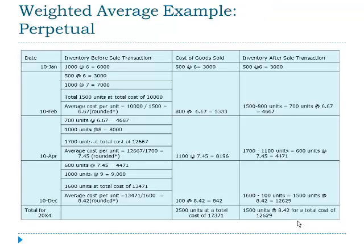I'm providing this illustration of the weighted average example using a perpetual system, although we won't actually be doing those computations at this level. As you look through the work, you can see that we need to figure a new average cost after every purchase of additional inventory, making this a much more complex way of estimating inventory.